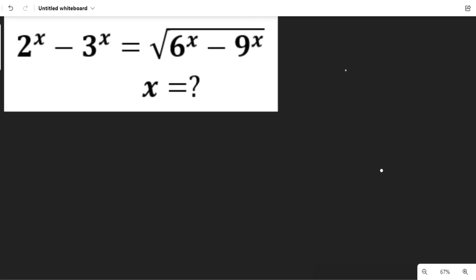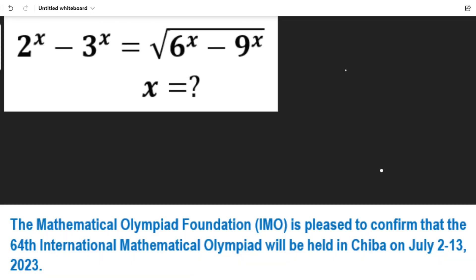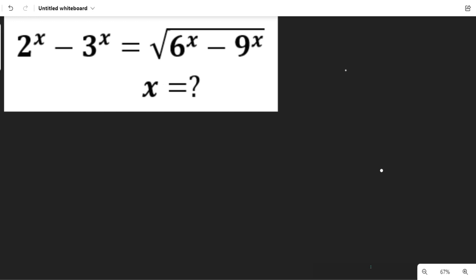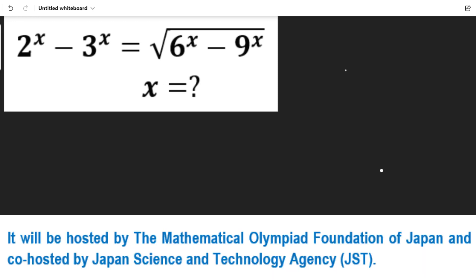2 raised to the power of x minus 3 raised to the power of x equals the square root of 6^x minus 9^x. We are asked to find x in this exponential equation.